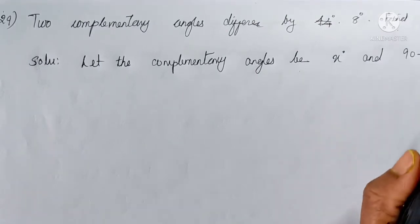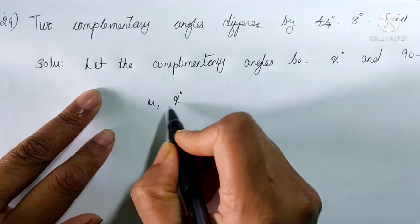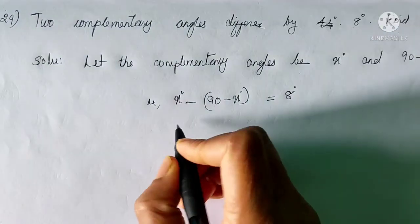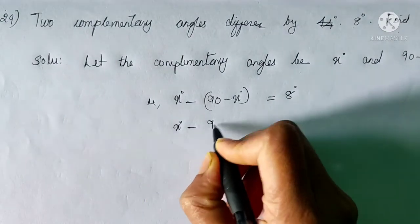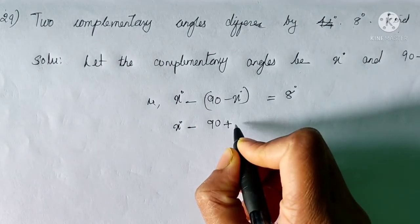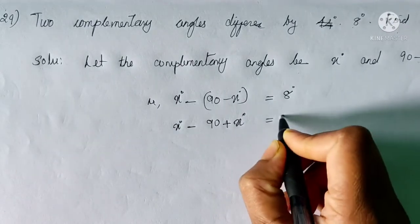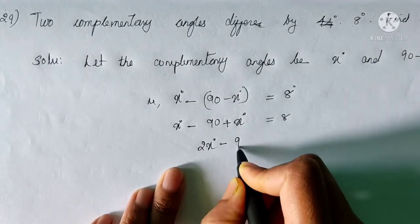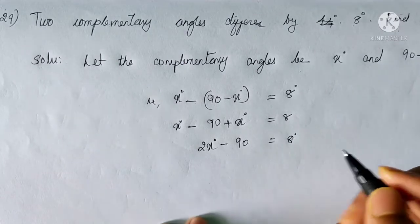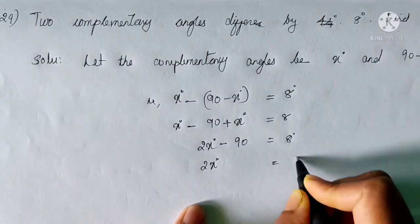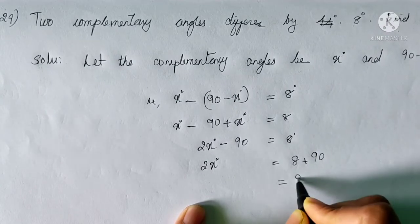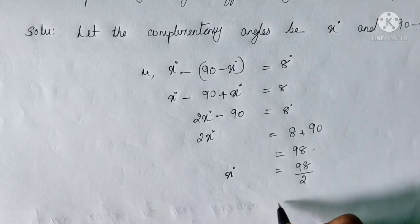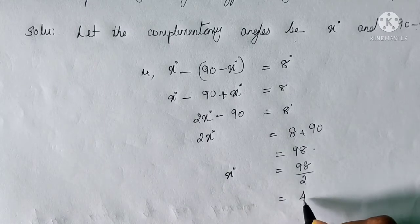And what is given in the question? Their difference is 8 degrees. That is, X degrees minus (90 minus X) degrees is equal to 8 degrees. Then X minus 90, and minus minus becomes plus X, is equal to 8. X plus X becomes 2X. So 2X minus 90 is equal to 8. That is, 2X is equal to 8 plus 90, which is 98. Therefore X is equal to 98 divided by 2, and this is equal to 49.